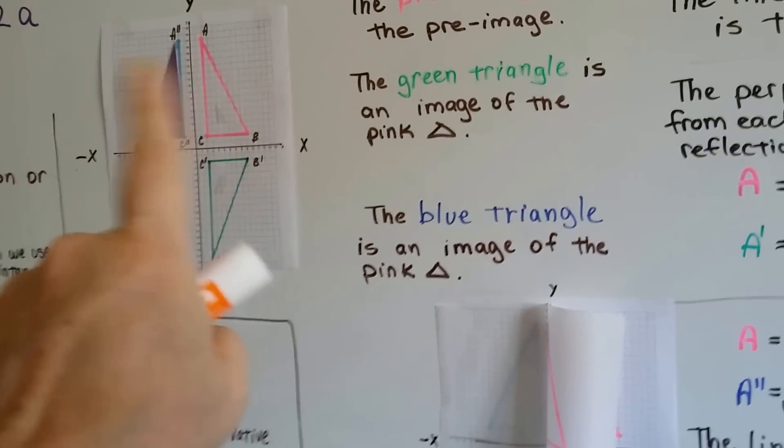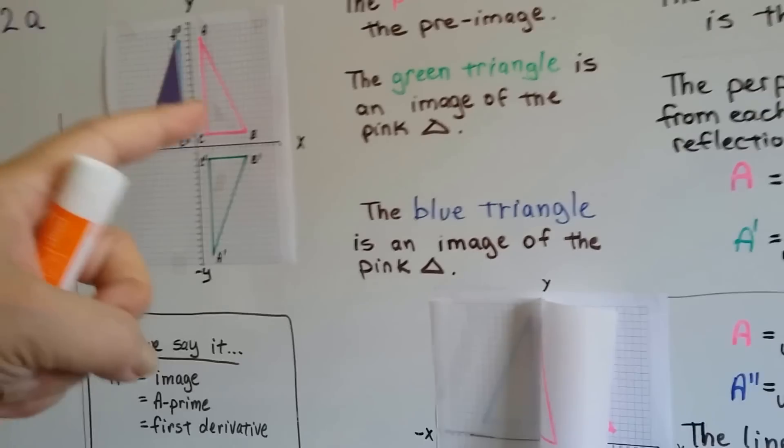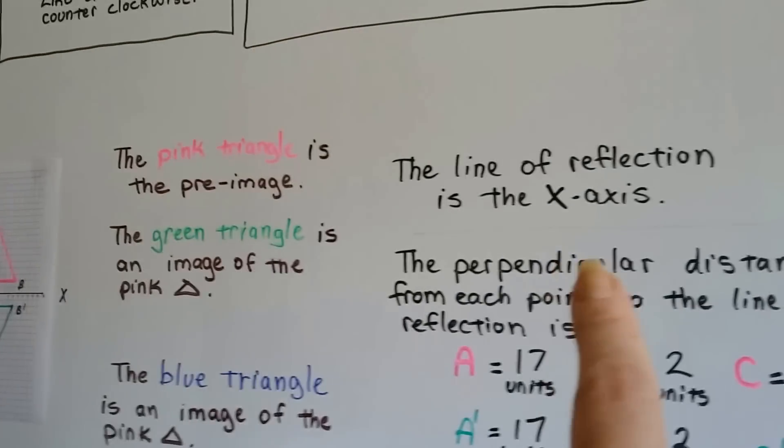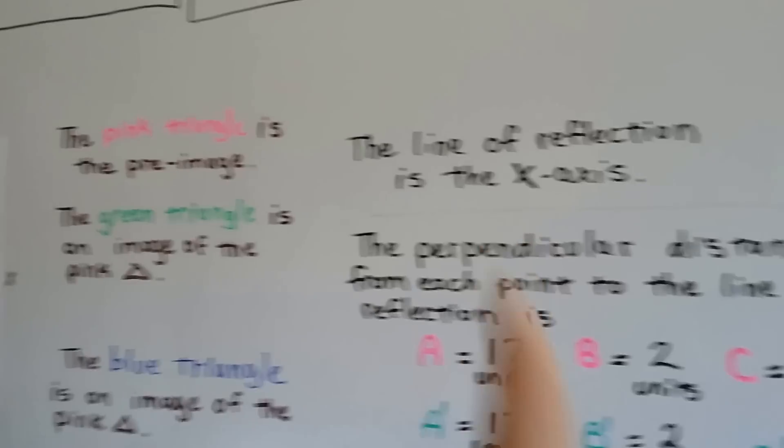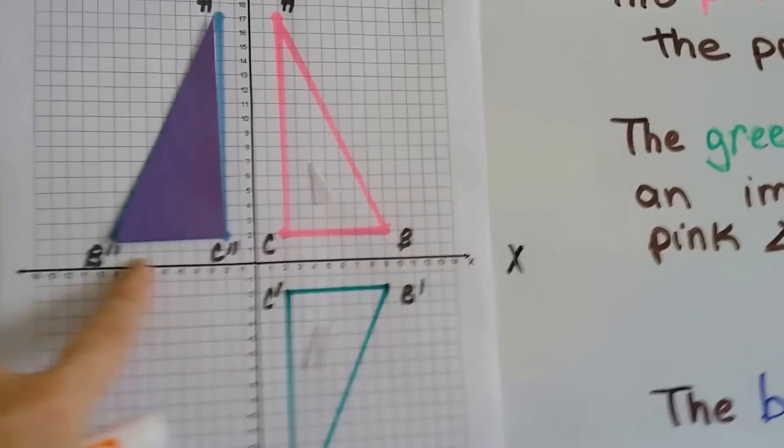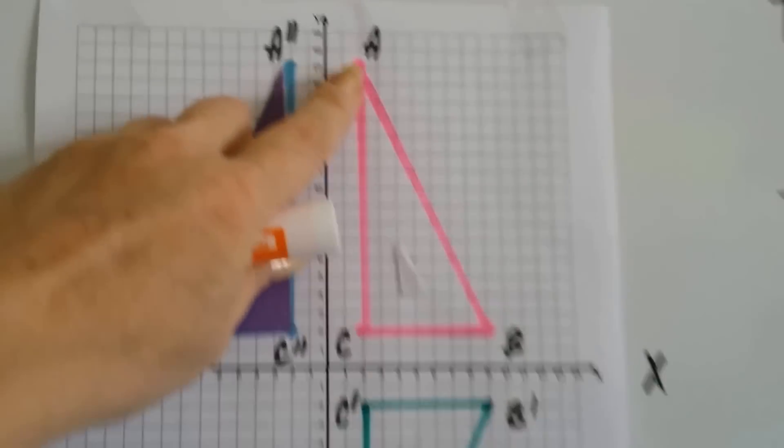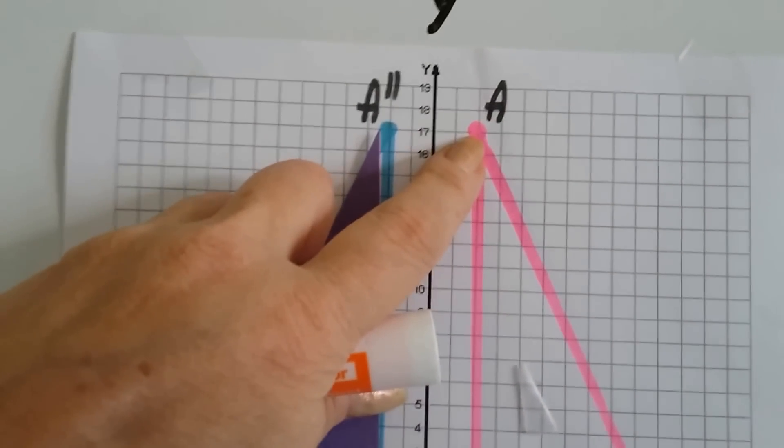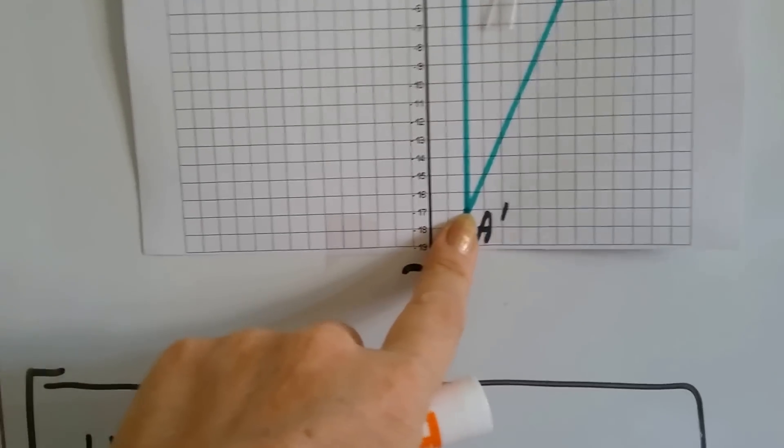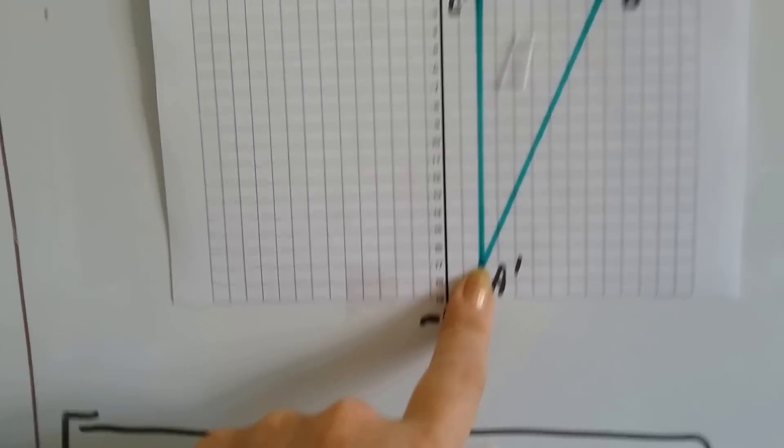So this is a reflection and the green one is a reflection. Now the line of reflection for the green triangle is the x-axis. Do you see this? Here is the x-axis. And if you look, A is at 17 up here on the y, and it's at negative 17.